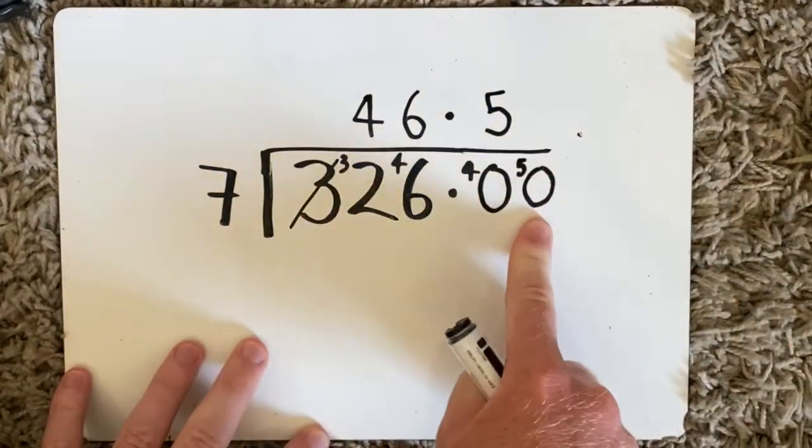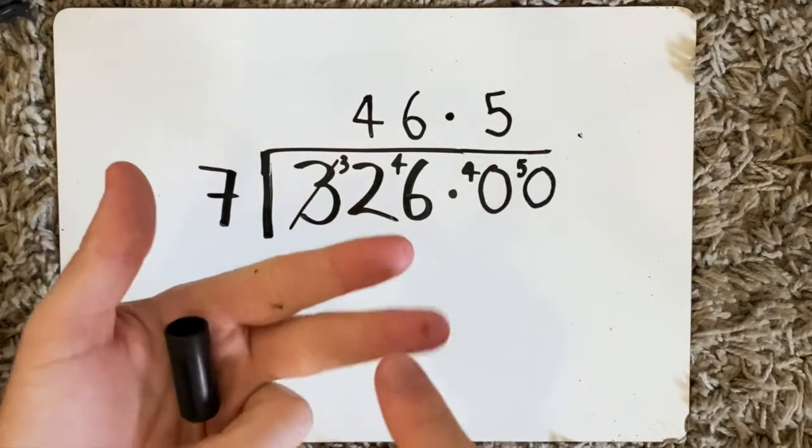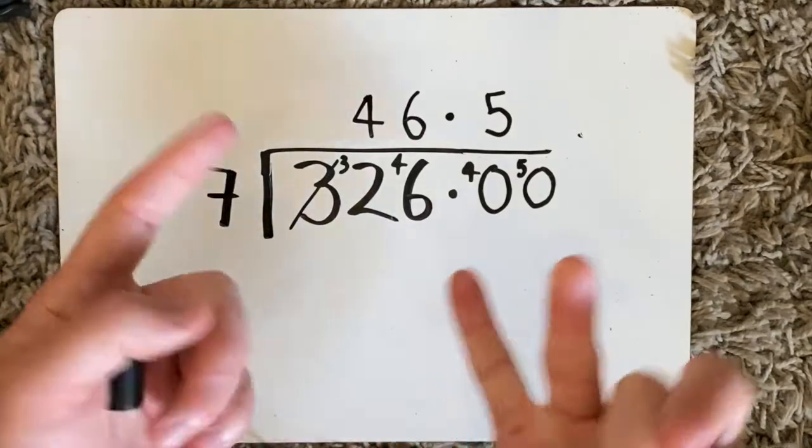How many sevens in 50 now? And I repeat the process. So 7, 14, 21, 28, 35, 42, 49. So there's 7.